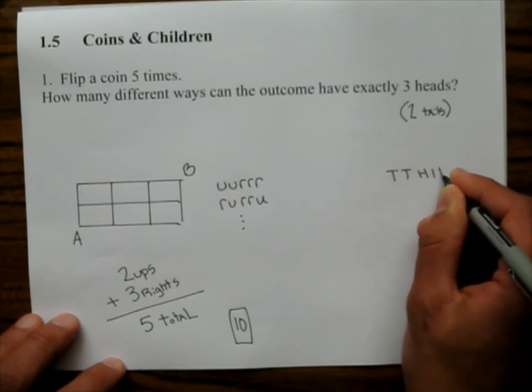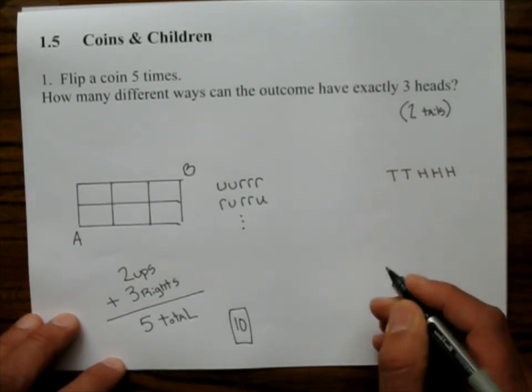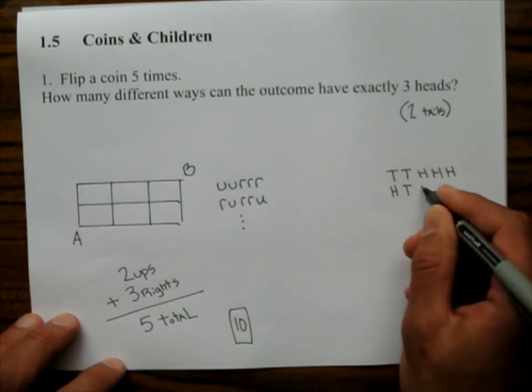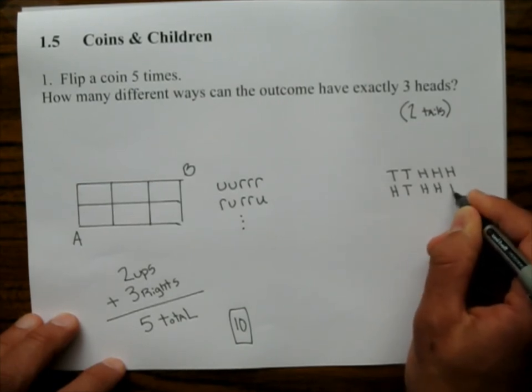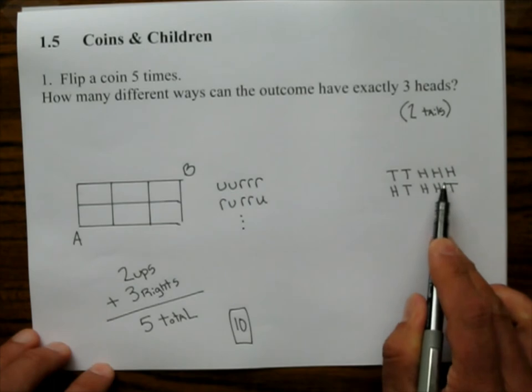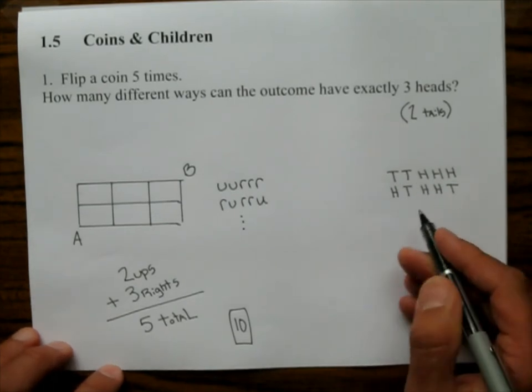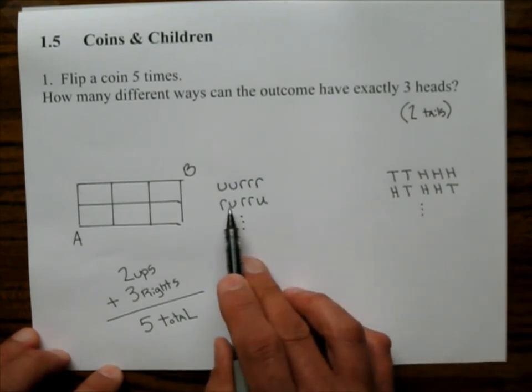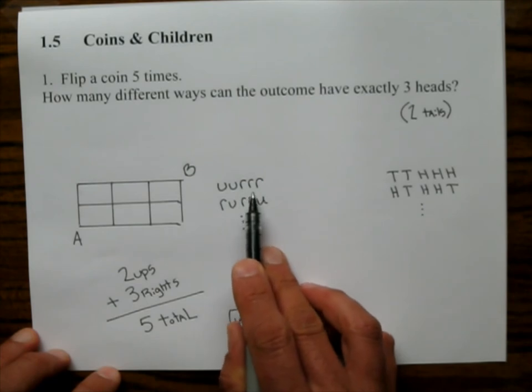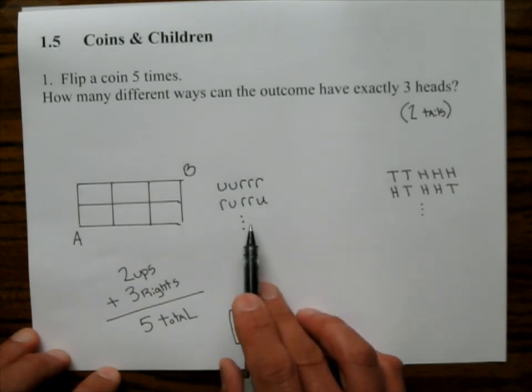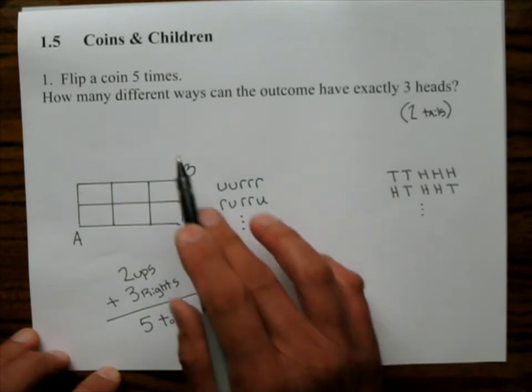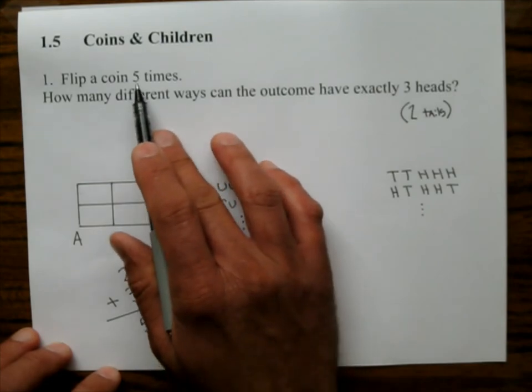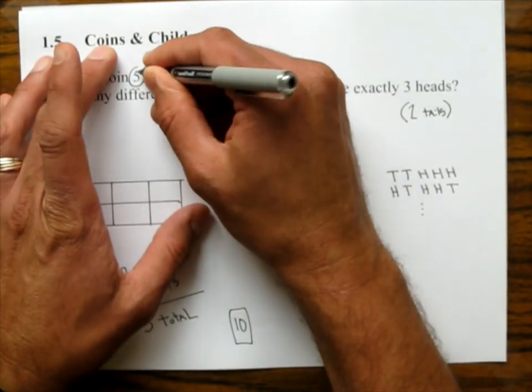Or maybe we can have head, tail, head, head, tail. So it's got to be three H's and two T's when you write this out. Does this look familiar? And the answer is yes. This is how to have three R's and two U's. And we can write all ten of them down, but we don't have to because they're not asking us to write all the possibilities. They're saying how many different ways.